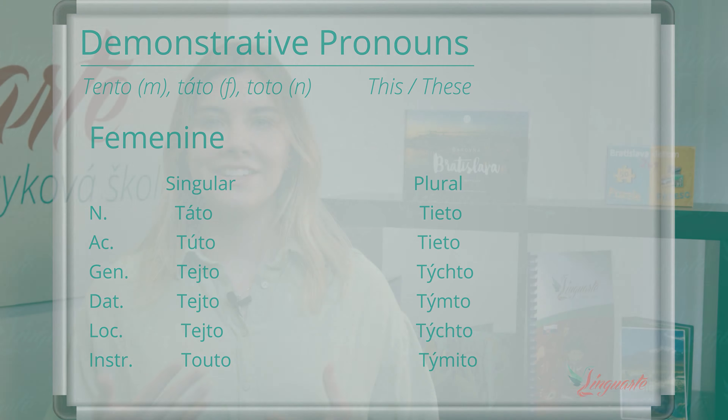These pronouns correspond to the English 'that' and 'those.' Some examples: Ten muž je vysoký. — That man is tall. Tá kniha je zaujímavá. — That book is interesting. To auto je nové. — That car is new.